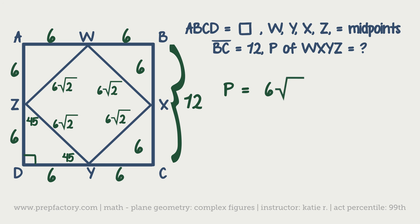So all we have to do in order to figure out the perimeter is say okay, the perimeter is equal to 6 radical 2 times 4 because there are four of them. So you'd have 24 radical 2 as your perimeter. That would be your final answer.